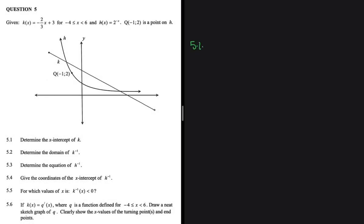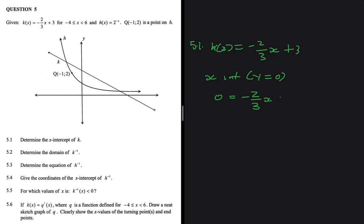5.1 is asking us to determine the x-intercept of k. We're given the equation k of x equals minus 2 divided by 3x plus 3. In order to find the x-intercept, we let y equal 0. So we get 0 equals minus 2 divided by 3 multiplied by x plus 3.